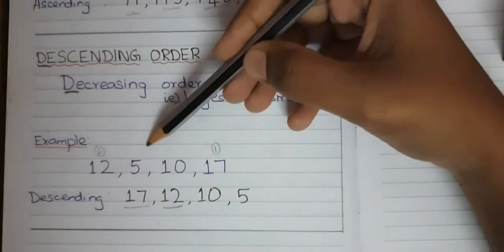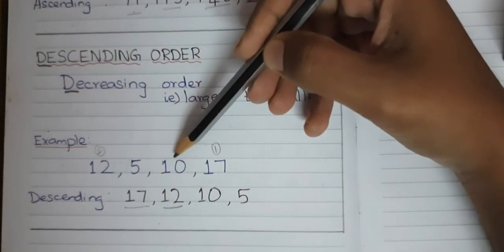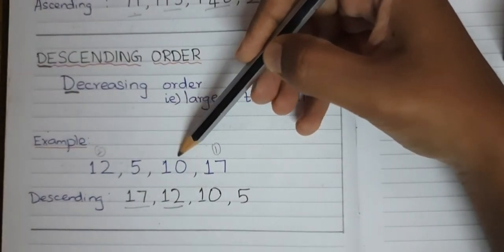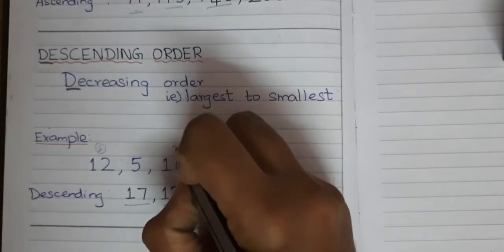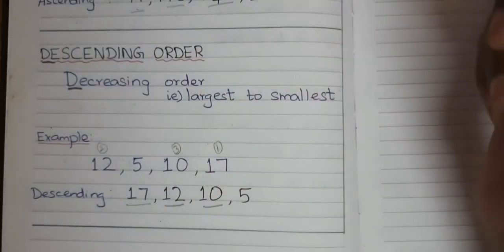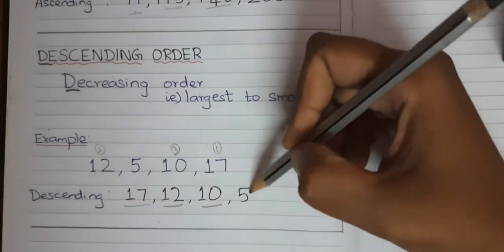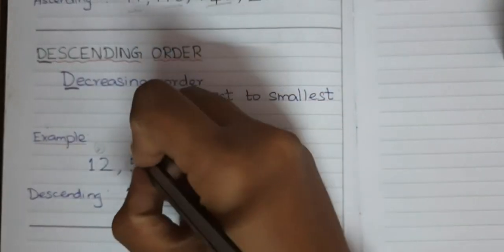Next, what is the number left? 5 and 10. Among these 2, which is the largest number? 10. It is a 2 digit number. Right. So, write 10 here. Next, what is the number left? 5.